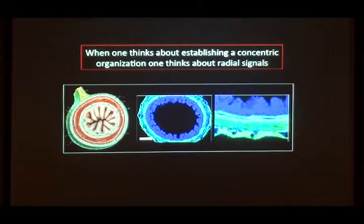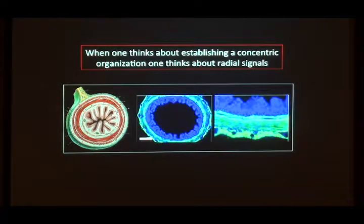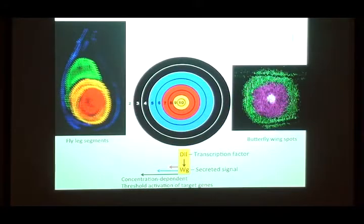These different layers of muscle, shown here again with the actin stain, are concentric circles — one surrounded by the next within the next. This bullseye target orientation immediately makes one in developmental biology think of radial signals. You've got a radial organization, so one thinks of radial signals. The paradigm for that came from Drosophila, where we know that in getting concentric domains of expression in the leg disc, or giving you beautiful patterns of eye spots in butterflies, both are set up by the same series of transcription factors and signals.